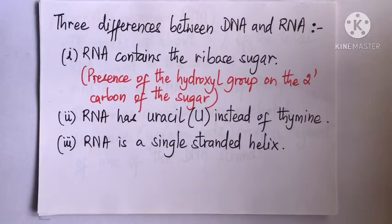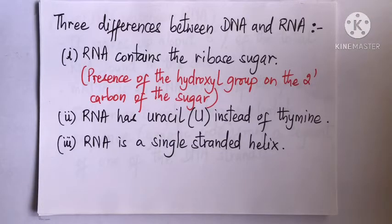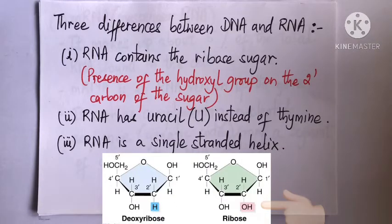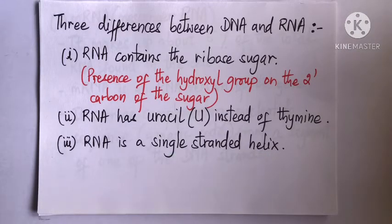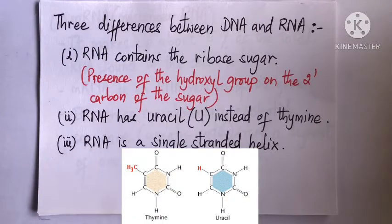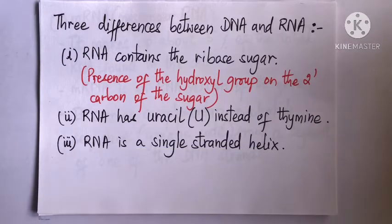You already know that the chemical structure of RNA is very similar to that of DNA. Yet, the three key differences that distinguish RNA from DNA are: 1. RNA has the ribose sugar. Unlike the deoxyribose sugar in DNA, ribose in RNA has a hydroxyl group on the two-prime carbon of the sugar. Secondly, out of the four nitrogenous bases, RNA has uracil instead of thymine. And thirdly, RNA is single-stranded.